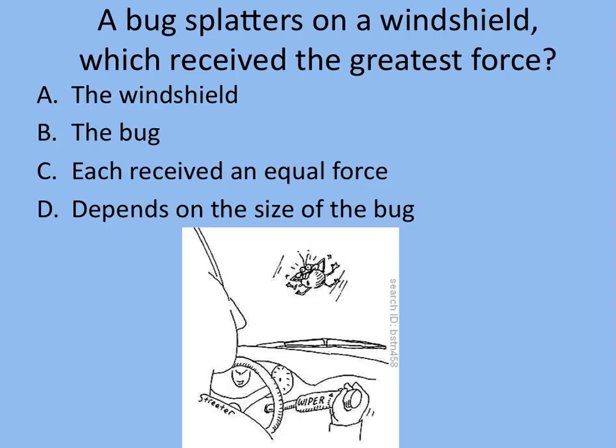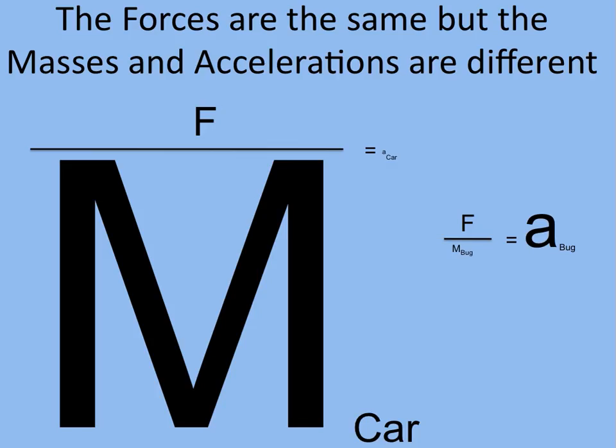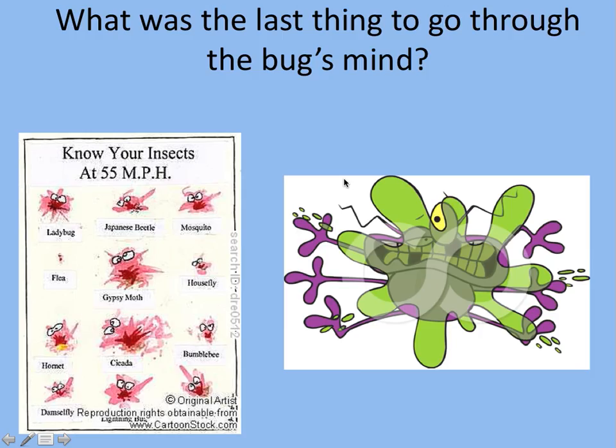And how about a bug splattering on a windshield, which received the greatest force? Hopefully you've got these down now. You don't even have to pause it. You know the answer is they each receive equal force. You know something's different, but that is the acceleration. So the bug had a much larger acceleration. The car would slow down a little bit when the bug hit it, depending on how you adjusted the accelerator when that happened. But the forces are the same. Mass is very different, so the acceleration is very different. And what was the last thing to go through the bug's mind? His butt.